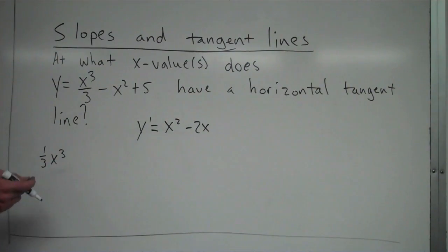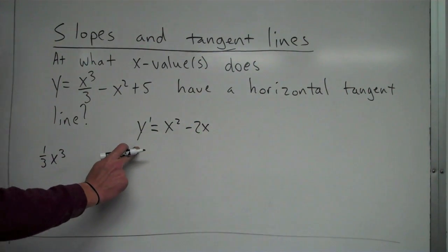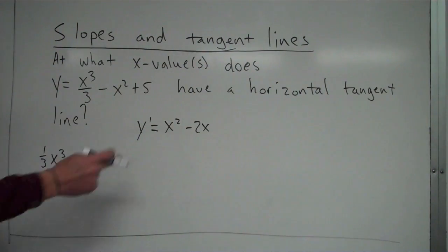So I want to see, okay, again, my goal is find where does this have a horizontal tangent line. That is the same thing as saying where is the derivative equal to 0, where is the slope equal to 0.